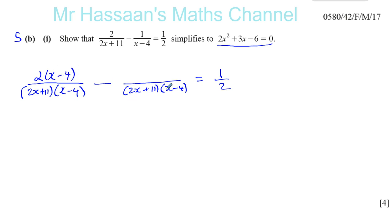What did I have to do to 2x minus 4 to make it 2x plus 11 times x minus 4? Well, obviously I multiplied it by 2x plus 11. So I'm going to do something here, I'm going to put 1 times 2x plus 11. I'm going to be careful because there's a negative sign here. If there was a positive sign here, I would have just put 2x plus 11, I wouldn't bother about the 1 here.